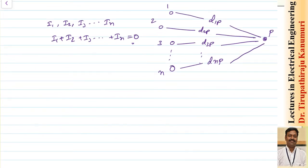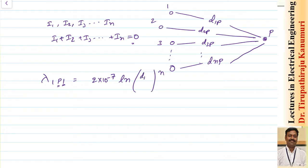Since point P is very far, let us calculate the flux linkages of conductor one with respect to the current passing through its own conductor — that means the current passing through conductor one up to point P. This can be written as 2×10⁻⁷ into ln of D1P divided by r1 dash, in Weber-turns per meter. We have seen how this came in the last class. The value of r1 dash equals 0.7788 times r1, on account of the internal flux linkages, which we also discussed in the last class.